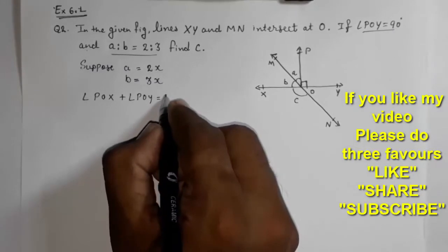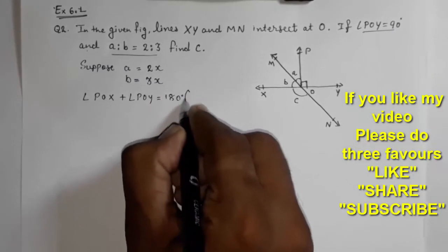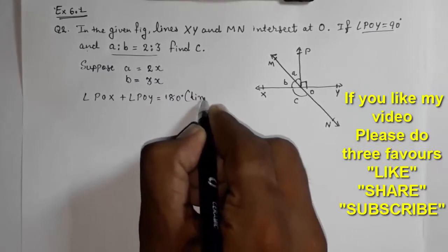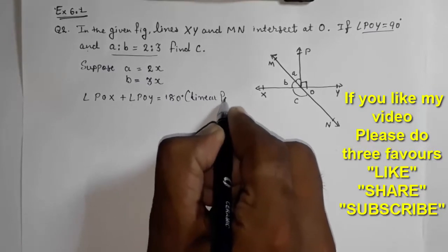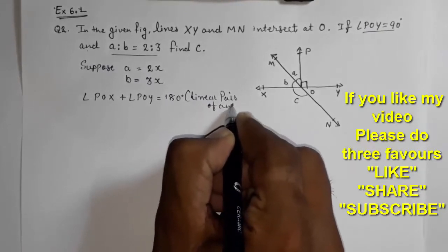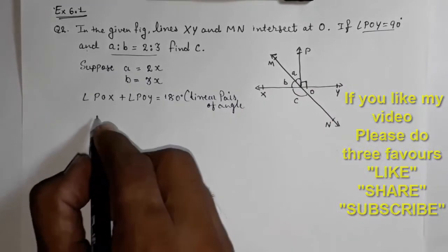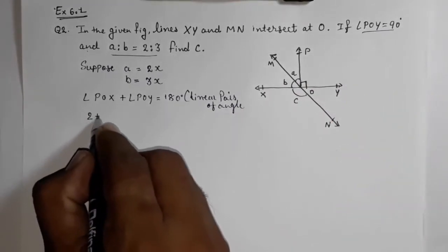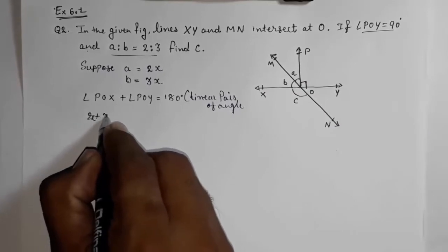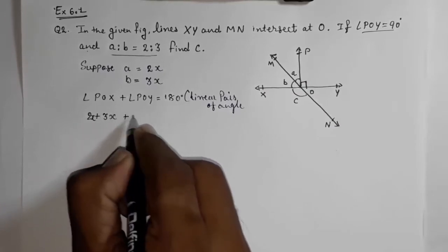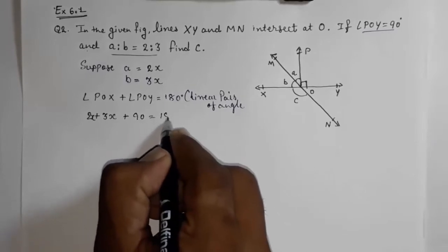So we are going to write angle POX plus angle POY is equal to 180 degrees by linear pair of angles. Now POX, that is a plus b, so we can write directly 2x plus 3x plus 90 is equal to 180.